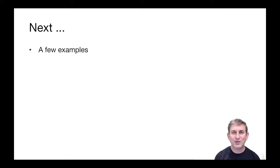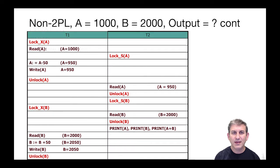Next let's look at some schedules and we'll interleave locking into the schedules and see how it affects things. In this first schedule it's a non two-phase locking schedule. We're starting out with two bank accounts A and B. A has $1,000 and B is $2,000, and then we're going to have a print statement in transaction two to print out some stuff about the sum of the two accounts.